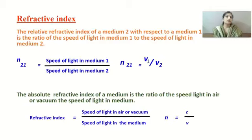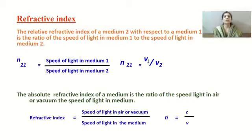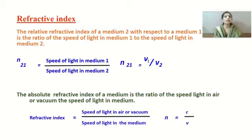The refractive index of medium 2 with respect to medium 1 is the ratio of the speed of light in medium 1 to the speed of light in medium 2. In simple language, the refractive index indicates the extent to which light bends in a particular medium — how much bending of light occurs from one medium to another. So refractive index n₂₁ = v₁/v₂.